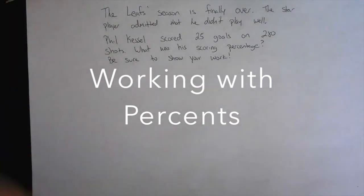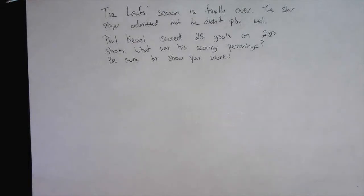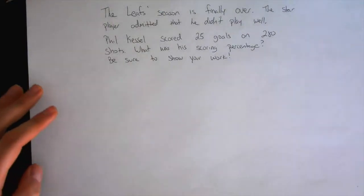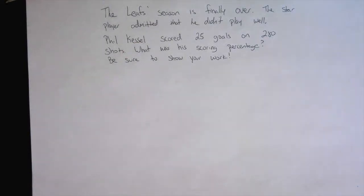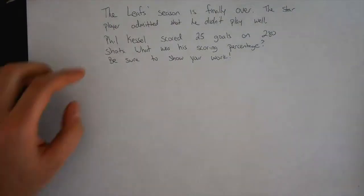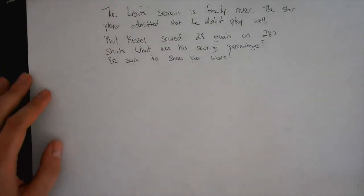Okay, so today's math question. As you know, the Leafs season is finally over. Thank goodness, right? Terrible season. The star player admitted yesterday that he didn't play so well this year and pointed the fingers at himself. It was his fault. Well, that's why the entire team, except for the mascot, got fired Sunday. So Phil Kessel scored 25 goals on 280 shots. What was his scoring percentage? Be sure to show your work.